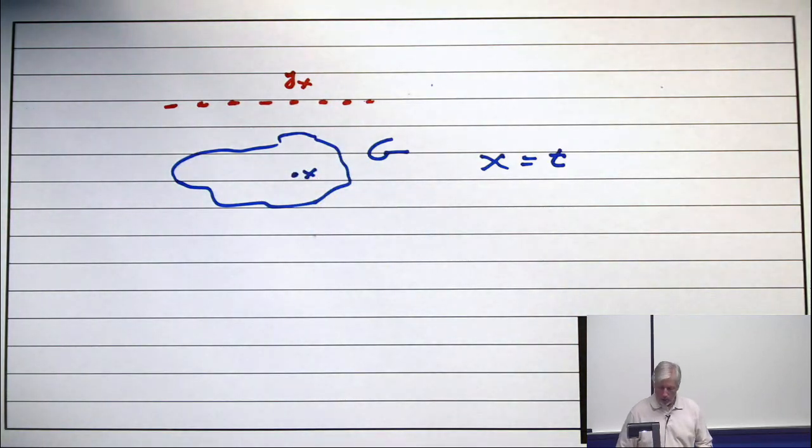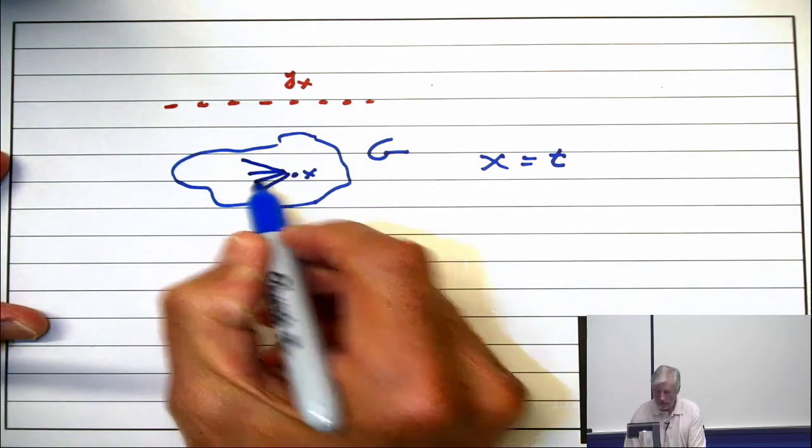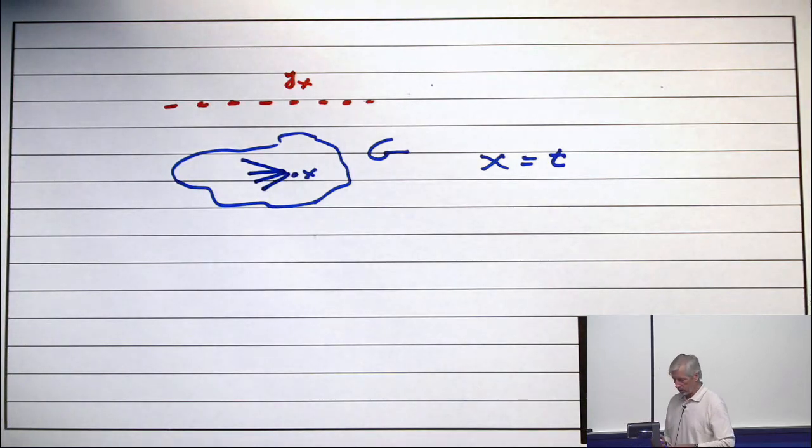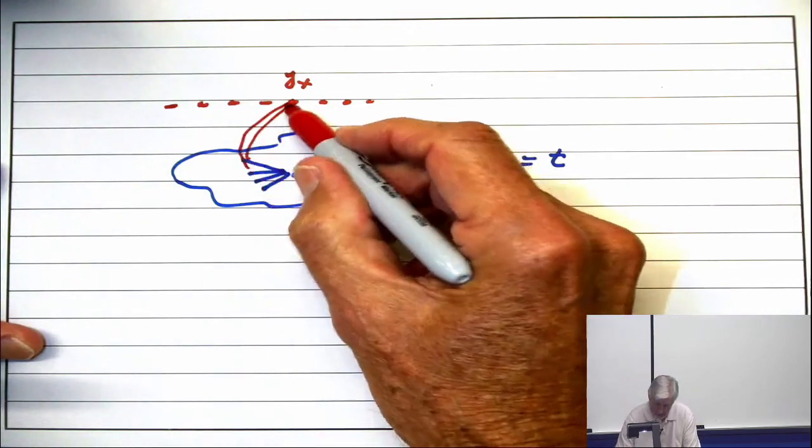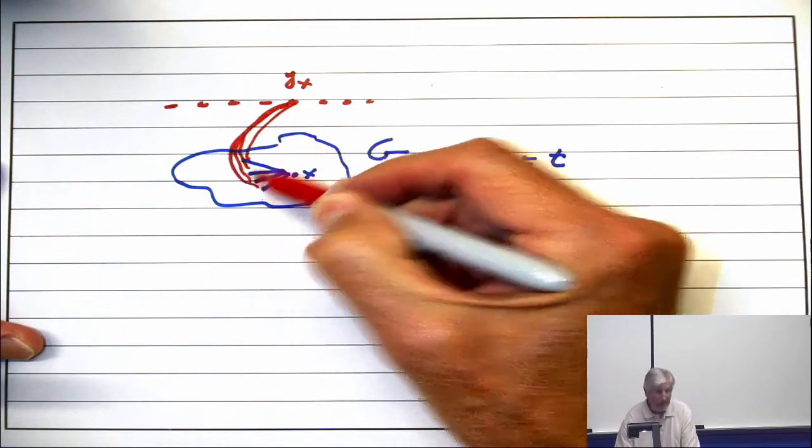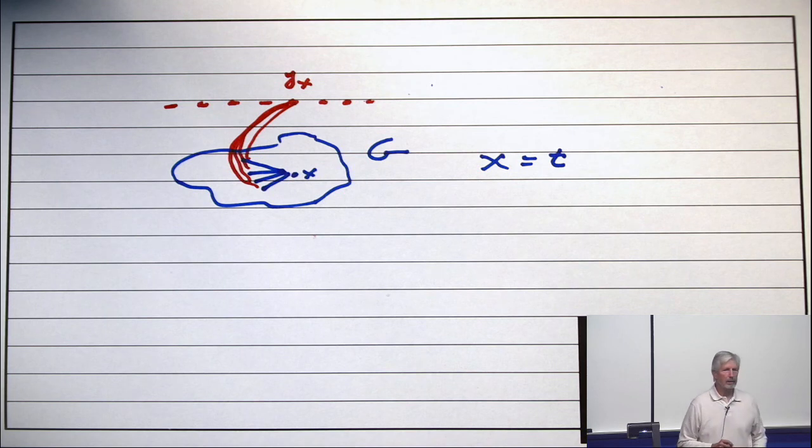There are edges between this and this. And here's what we do. x has a neighborhood. Those are the neighbors of x. And I make its mate adjacent to the same set. But not to x.